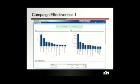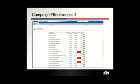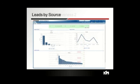Campaign effectiveness shows the number of closed deals and close rate. On the right-hand side you have closed revenue — meaning you can connect to your ERP system and see revenue where an actual order was created. There's also a campaign scorecard dashboard.